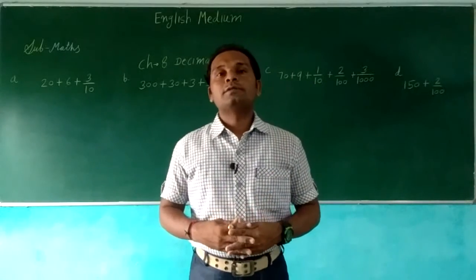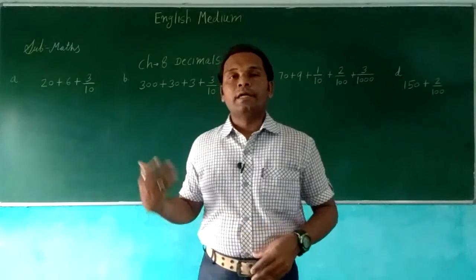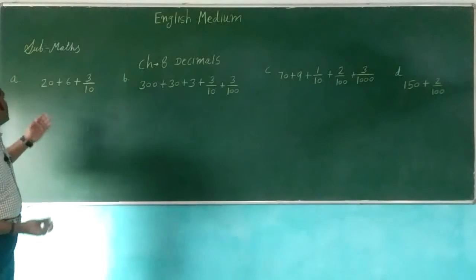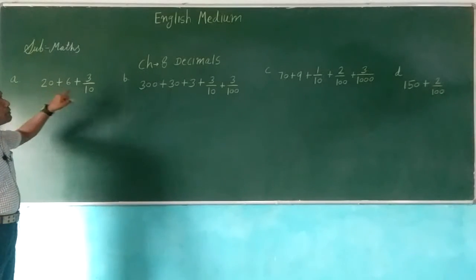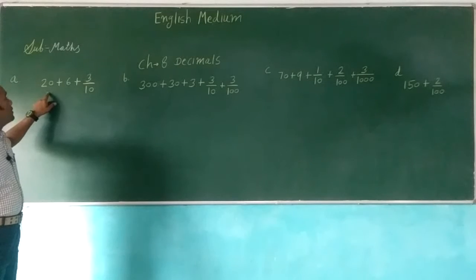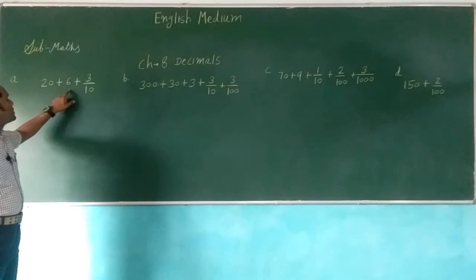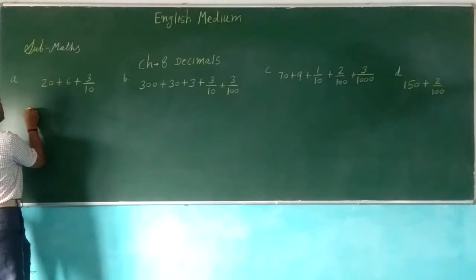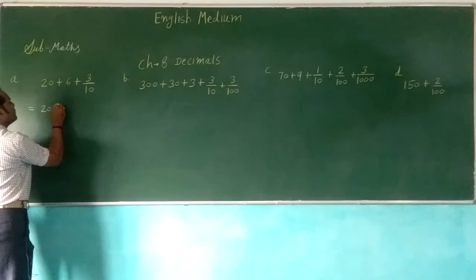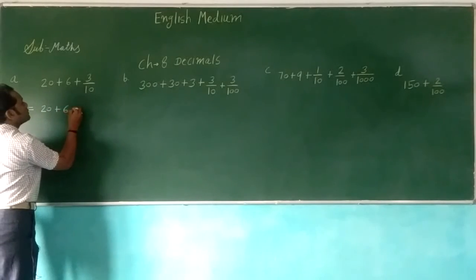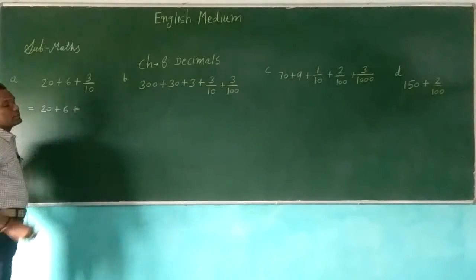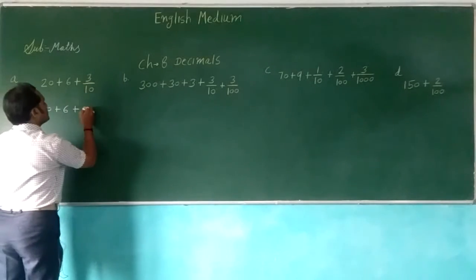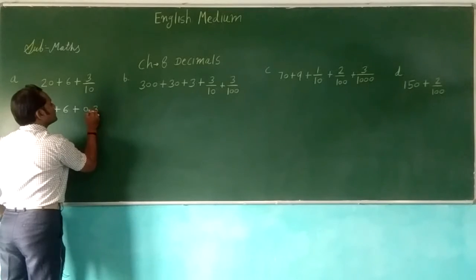So how to solve sums in decimal, that we'll see. So look at this board. Here 4 sums are given. The first sum is 20 plus 6 plus 3 by 10. So it is very easy to solve. We'll write 3 by 10 in decimal form as 0.3.